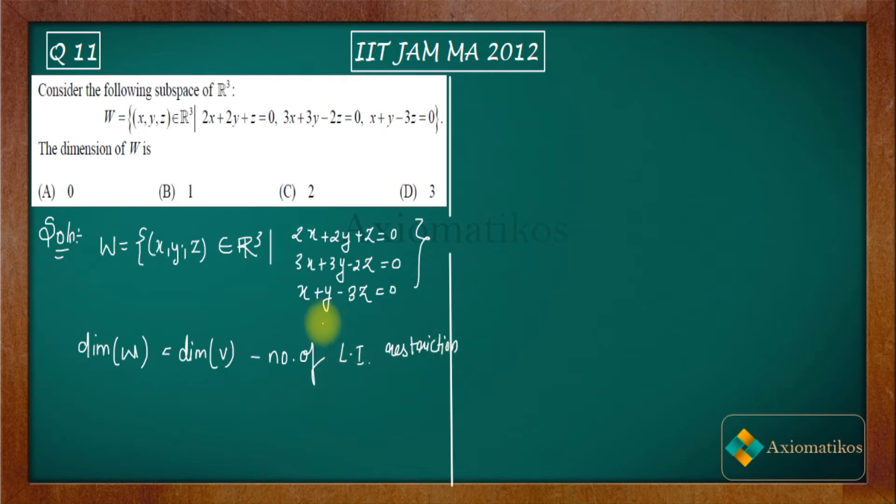What is the meaning of restriction? The restriction has an important meaning here. You are taking elements from R cube, but you are not taking every element. You are taking elements which satisfy these three conditions. So we can say these three are restrictions for an element to enter inside W.